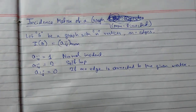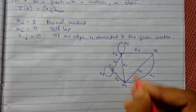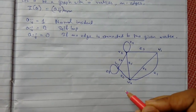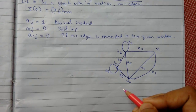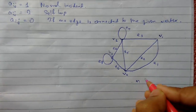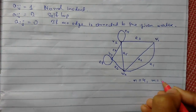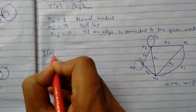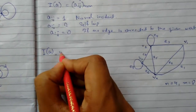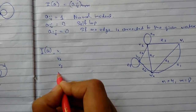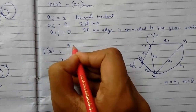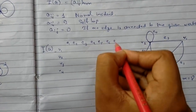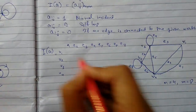Here is an example I will explain. There are four vertices and eight edges, so n equals 4 and m equals 8. We will now construct the incidence matrix of this graph. We plot the vertices along the rows and the edges E1 through E8 along the columns.